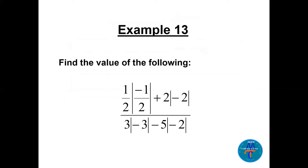Example 13: find the value of this expression — (1/2)|−1/2| + 2|−2| divided by 3|−3| − 5|−2|. You can pause the video for a minute and try to get the value — it's a number or fraction. Try to get the value and then continue to see the answer and steps on the next slide.